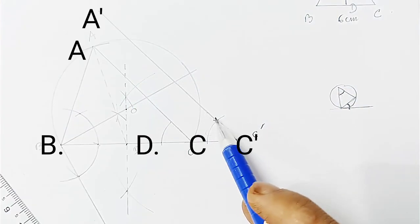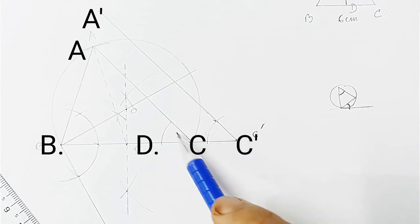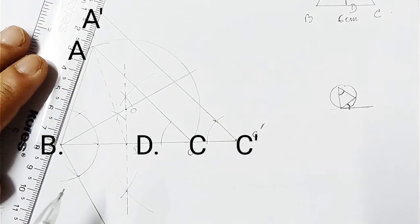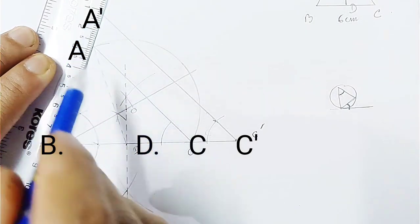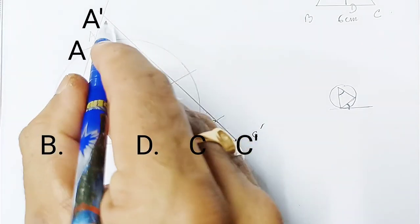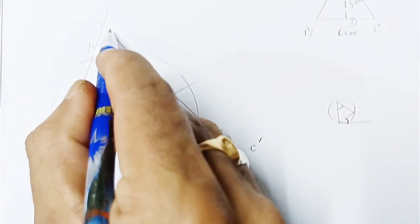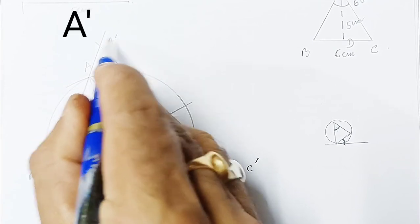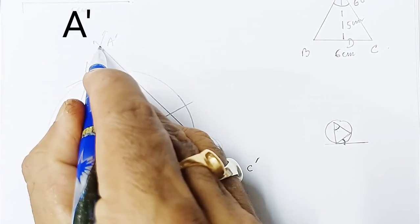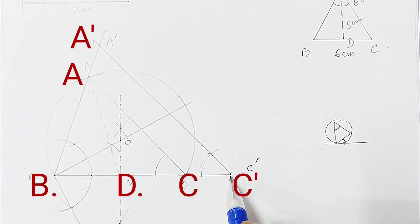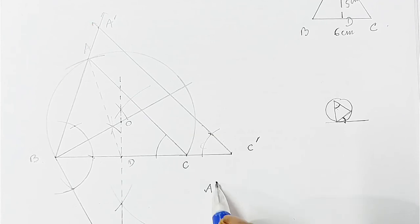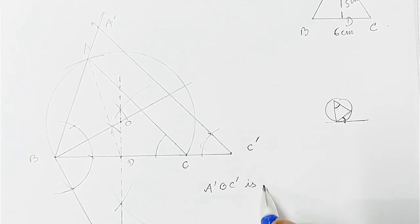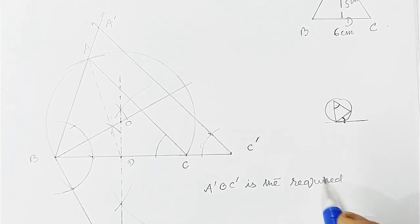After joining, you get a line segment parallel to AC. Now extend AB — it will cut this newly drawn line at a point, and that point is A'. So A' is the new vertex, B is unchanged, and C' is the new base endpoint. Triangle A'BC' is the required similar triangle.